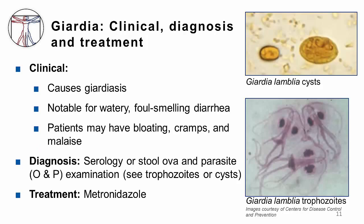Once again, the clinical manifestations follow the pathophysiology. Like Entamoeba, the cysts differentiate into trophozoites. The trophozoites attach to the gut wall but do not enter the bloodstream. There is inflammation of the duodenal mucosa, leading to malabsorption of fat and protein. Patients usually complain of watery, foul-smelling diarrhea. What's really notable about this infection is the amount of bloating, cramps, and malaise that patients experience, which may linger for several months even after the end of treatment.